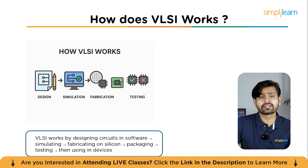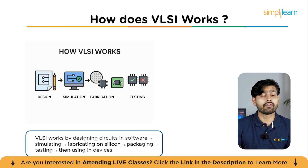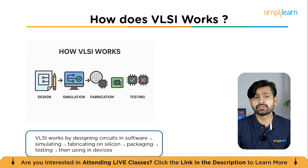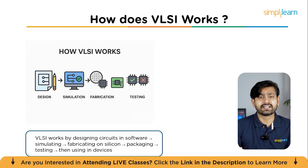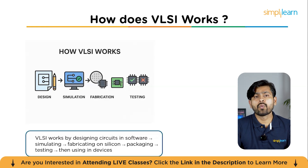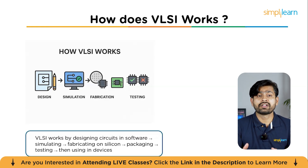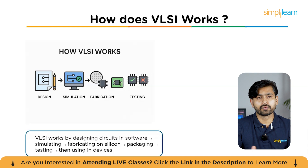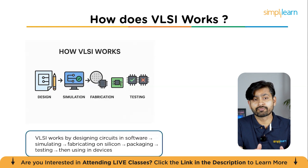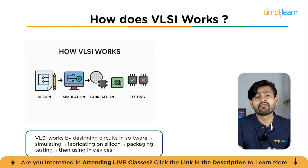Now let's explore how VLSI works step by step. First is design, where engineers plan on paper or computer how the chip should behave — like drawing a blueprint. Next is simulation, where the design is tested on a computer before fabrication to check everything works correctly. Then comes fabrication, where the chip is built on a tiny piece of silicon layer by layer. Finally, testing ensures the chip works properly; good ones go into devices while faulty ones are rejected.